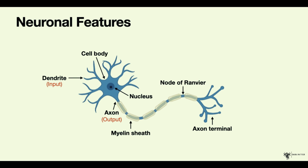The axon branches at the end will divide into multiple synaptic boutons, which we call the axon terminals. Each one of these can contact a neuron.